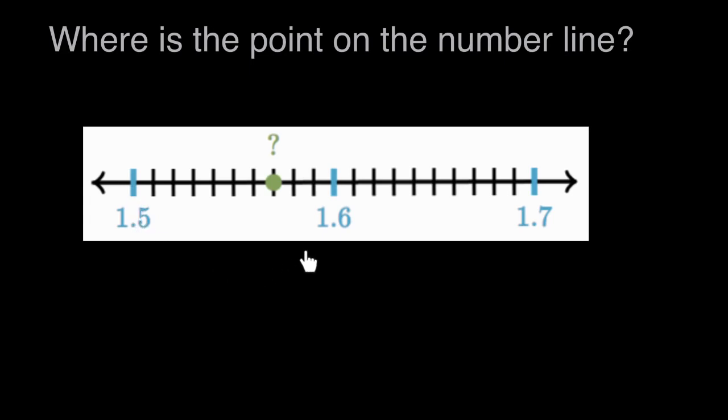So the distance between these larger blue tick marks is 1 tenth, because we go from 1 and 5 tenths to 1 and 6 tenths, so that went up a tenth, and then up to 1 and 7 tenths. So this distance here is 1 tenth.